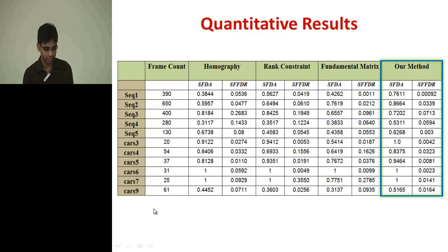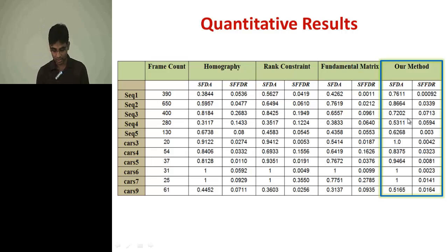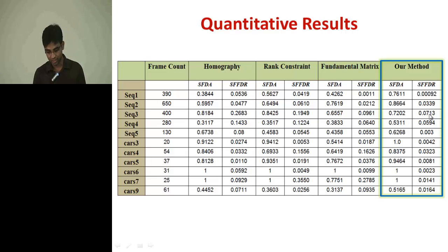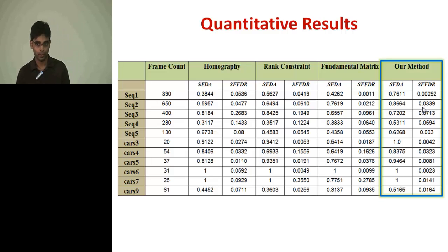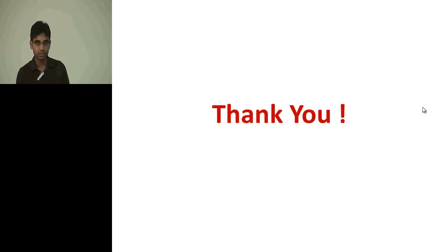The quantitative results show sequences 1 to 5 captured by us and sequences 3 to 9 taken from the JHU database 155. The last column shows our method's detection rate and false detection rate. In all cases, the detection rate is quite high and the false detection rate is very low. Thank you.